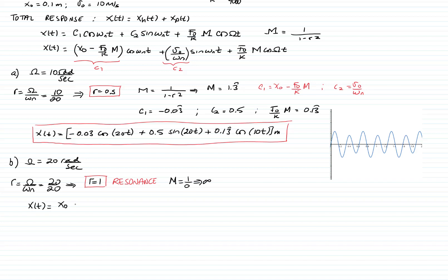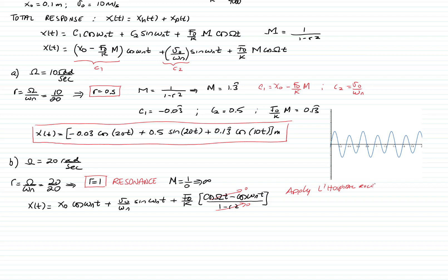At resonance, the response takes the form: x₀·cos(ωₙt) + (ẋ₀/ωₙ)·sin(ωₙt). The term (F₀/k)·[1/(1−r²)] becomes 0/0, so we apply L'Hôpital's rule. The resulting resonance solution adds the term (F₀/k)·(ωₙt/2)·sin(ωₙt). Notice that the amplitude of this third component is multiplied by t, meaning the response grows without bounds over time.